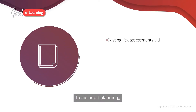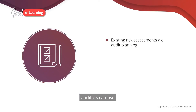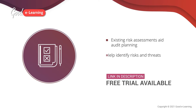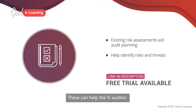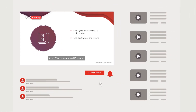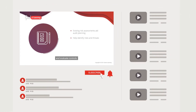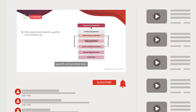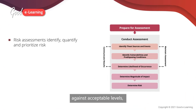To aid audit planning, auditors can use the organisation's existing risk assessments. These can help the IS auditor to identify risks and threats to an IT environment and IS system, and evaluate controls. Risk assessments should identify, quantify and prioritise risks against acceptable levels based on the organisation's objectives.